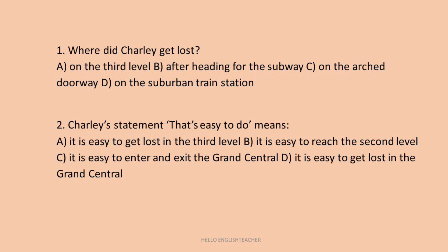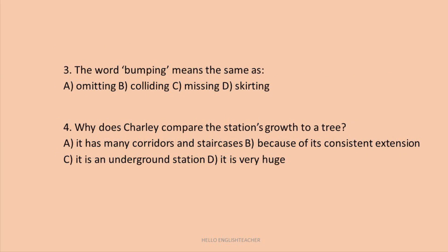Question 3: The word 'bumping' means the same as: omitting, colliding, missing or skirting. The answer is B, colliding. Question 4: Why does Charlie compare the station's growth to a tree? Options: it has many corridors and staircases; because of its consistent extension; it is an underground station; it is very huge. The answer is B — because of its consistent extension.